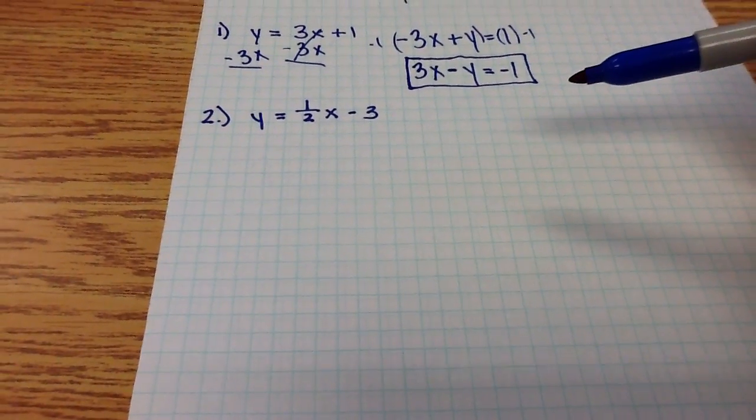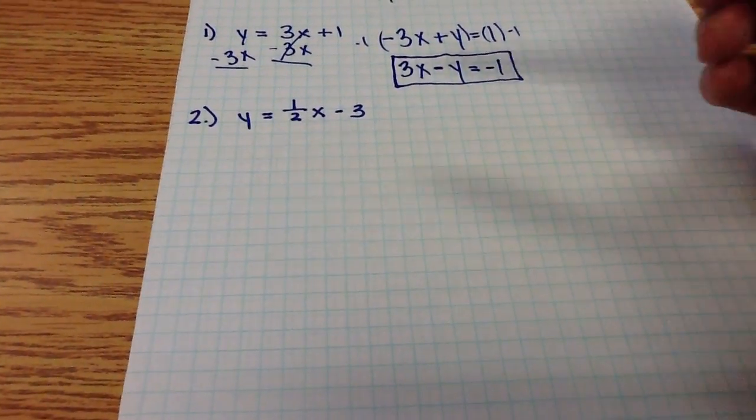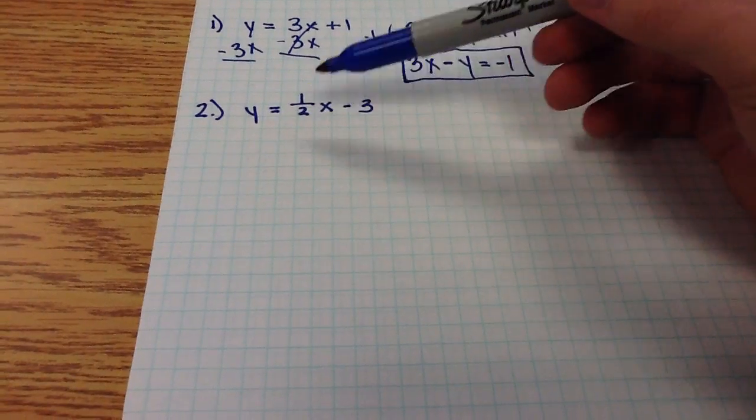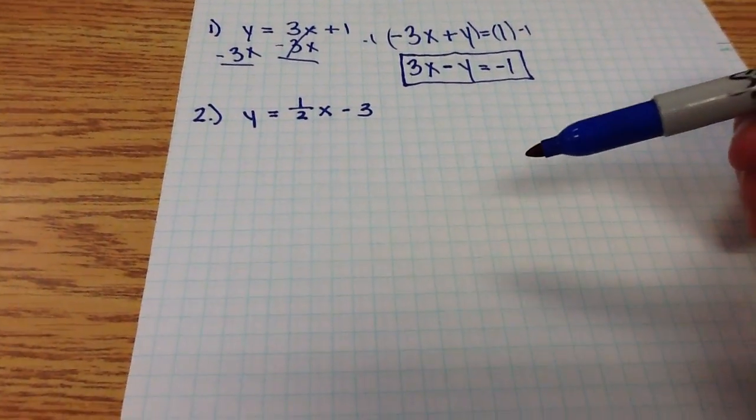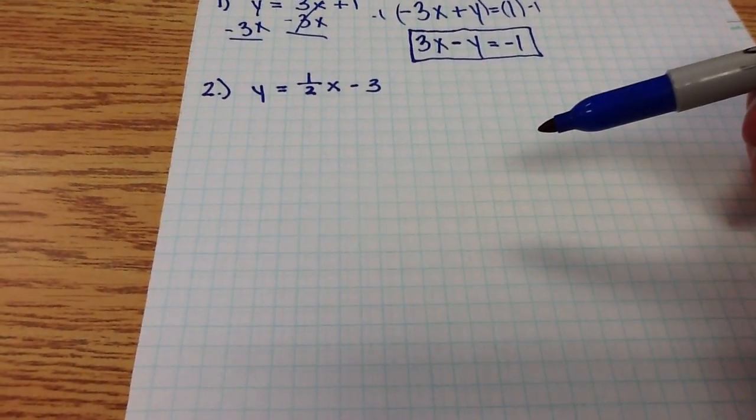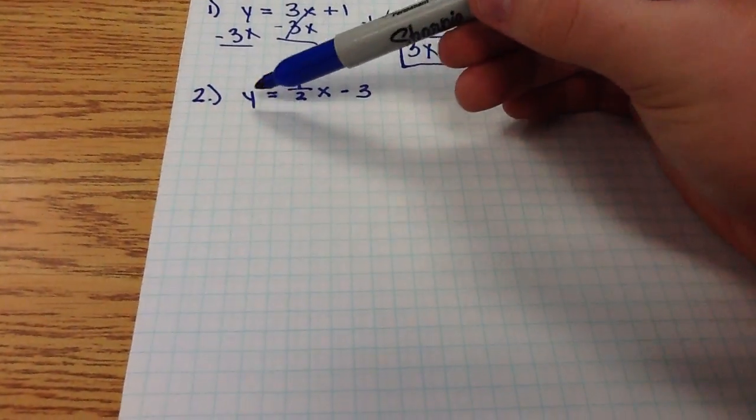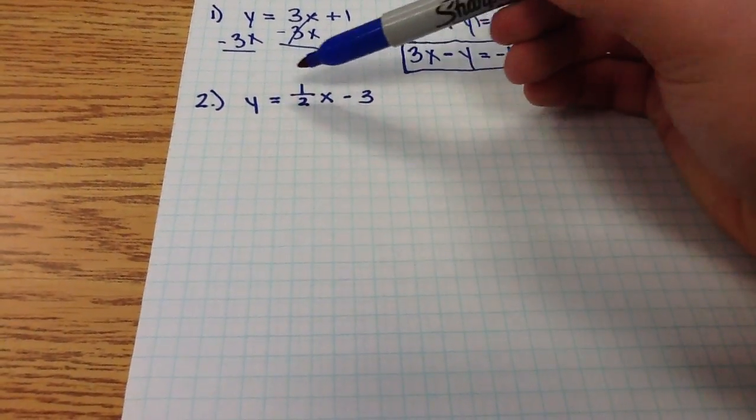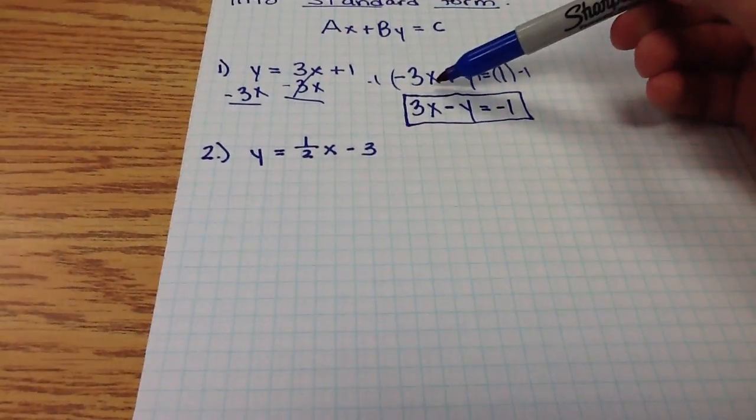So the first thing we need to do is, through multiplication, we need to eliminate this fraction. Remember, the multiplication property of equality says that I can multiply both sides of the equation by anything I want, just as we did up here. We multiply both sides of the equation by negative 1.